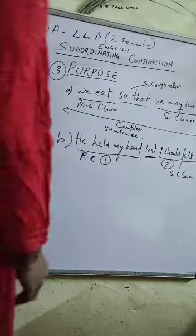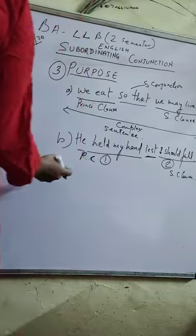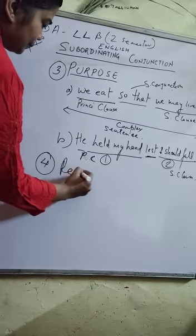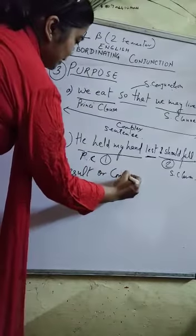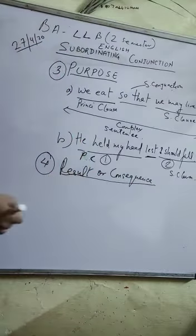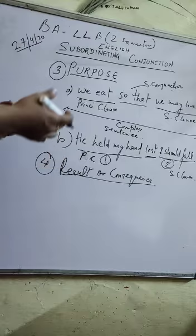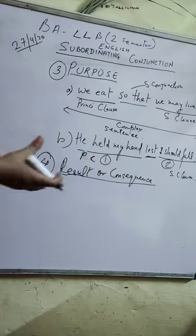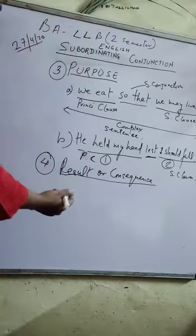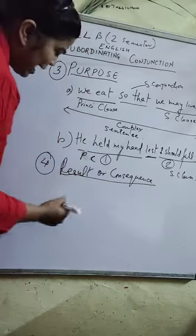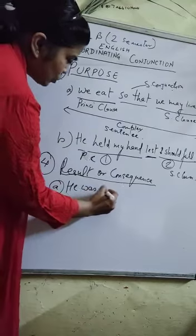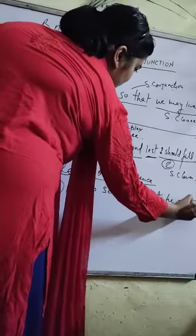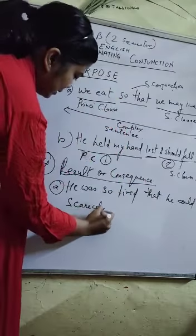So these are the two sentences we have under purpose. Now if we put the fourth category — result and consequences. इसका क्या परिणाम निकलता है उस sentence का, उसके ऊपर भी हमारा subordinating conjunction को हम identify कर सकते हैं. Example: 'He was so tired that he could scarcely stand.'